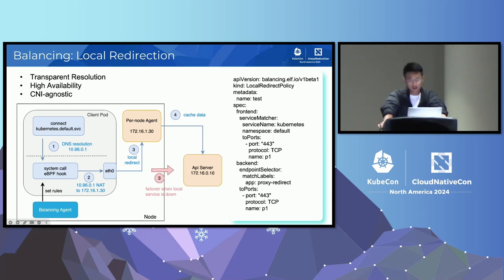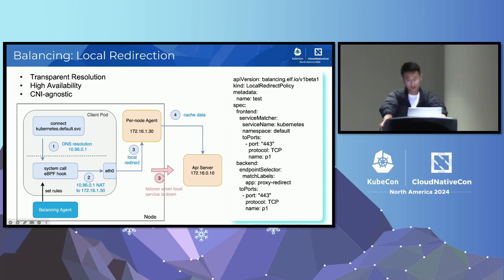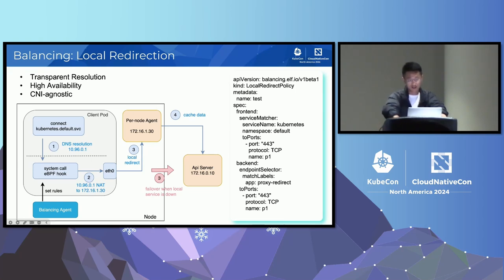This slide explains how to implement redirection for a per-node API server agent. When an application initiates an API server call, the eBPF program in the kernel redirects it to a node-local proxy. If the node-local proxy fails, the eBPF program falls back to forwarding the request directly to the API server. This approach offers transparent resolution, high availability, and independence from any specific CNI.